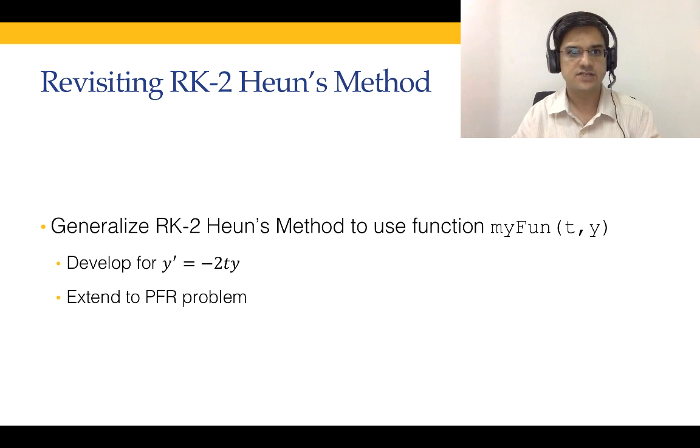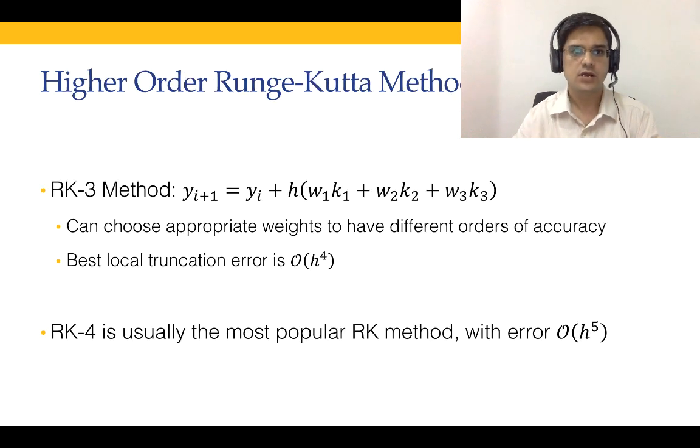What we have done is we revisited our RK2 Heun's method and generalized it to use a general function MYFUN and the PFR function PFRFUN. Next, we are going to extend this to RK4 method. The RK4 method is usually the most popular Runge-Kutta method. The RK3 method uses three weights W1 K1 plus W2 K2 plus W3 K3, whereas RK4 method also uses a fourth weight plus W4 K4.